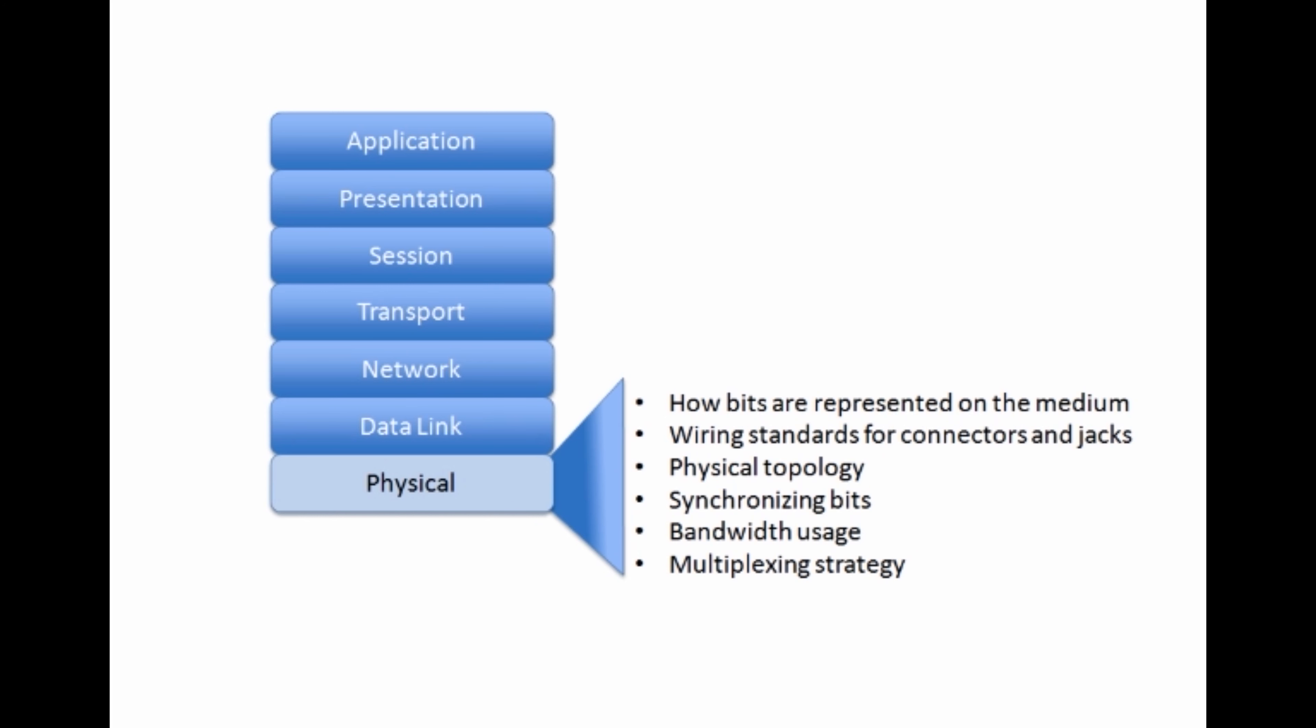Synchronizing bits. If we have two different devices communicating with one another, in order for those two devices to successfully communicate, they need to agree when one bit stops and another bit starts. They need some way to synchronize their bits. And there are two basic approaches to this.